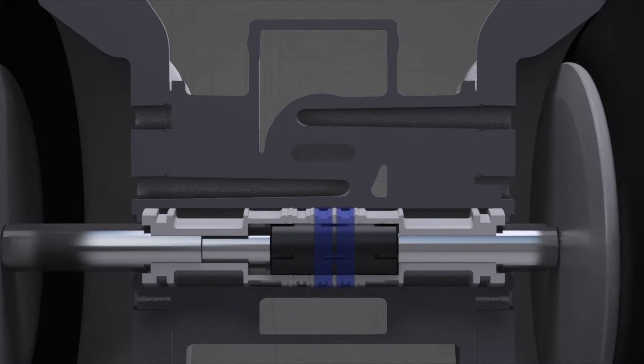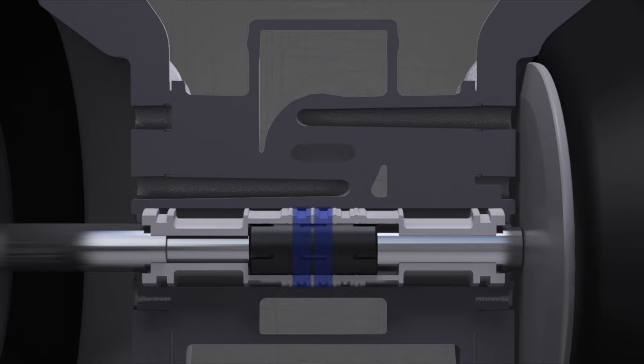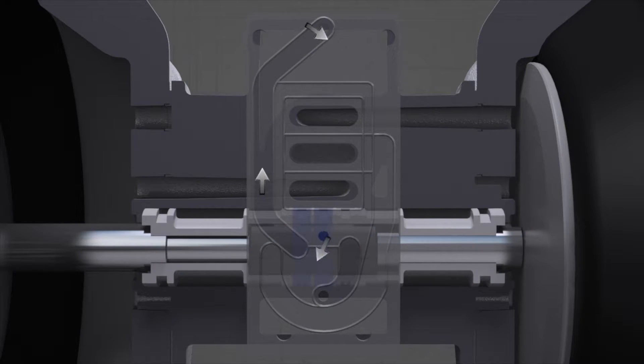When the pilot air valve travels far enough to the left, chamber three connects to chamber two and the air moves the main air valve downward.